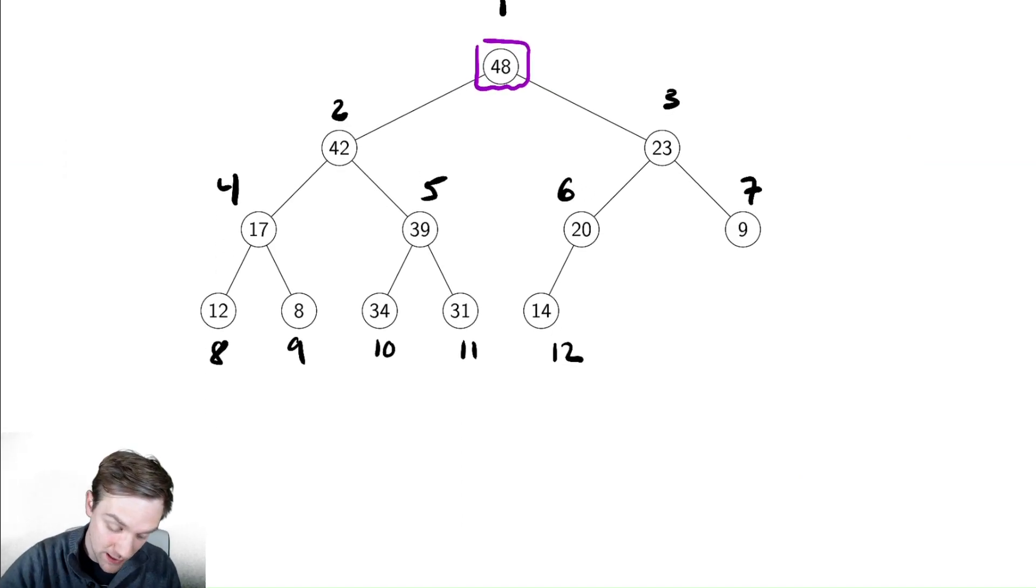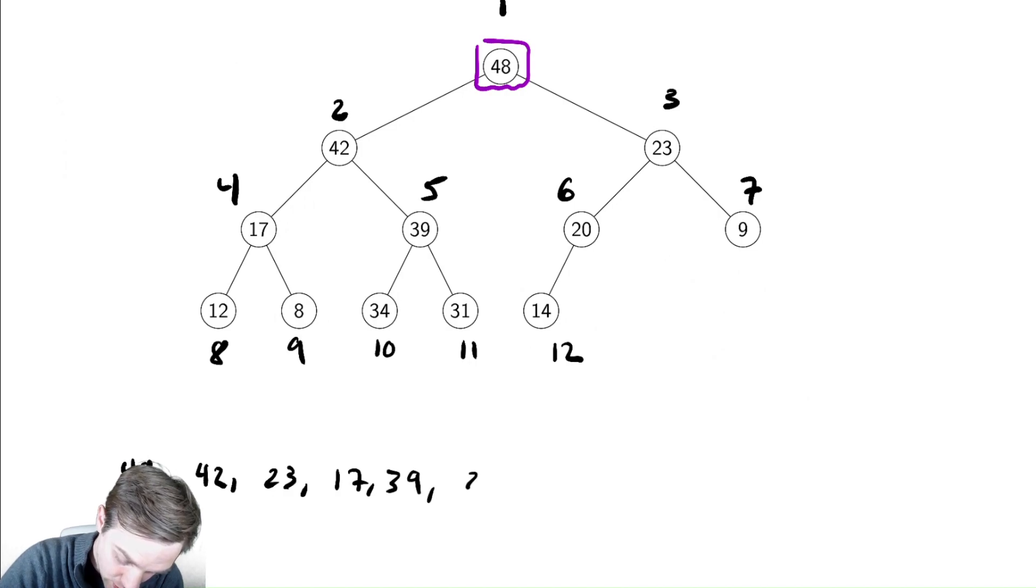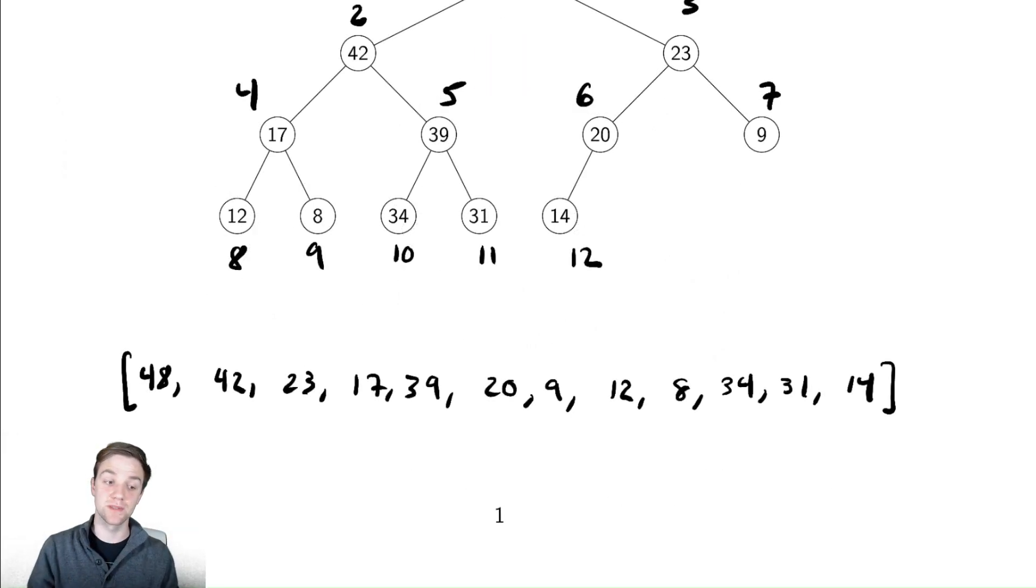So let's write down the array corresponding to this heap. 48, 42, 23, 17, 39, 20, 9, 12, 8, 34, 31, and 14. That is the array that corresponds to this heap. And now we don't need to worry about finagling around with pointers necessarily. As long as we can think about what we're doing with the operations on this array, then we don't need to necessarily concern ourselves too much with pointers. So we'll keep this in mind as we're doing our various implementations.